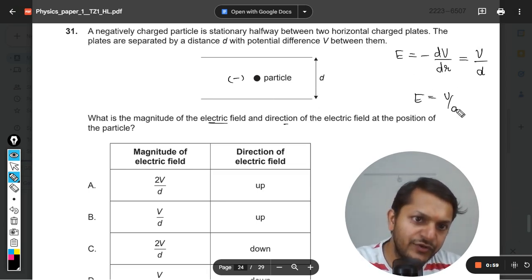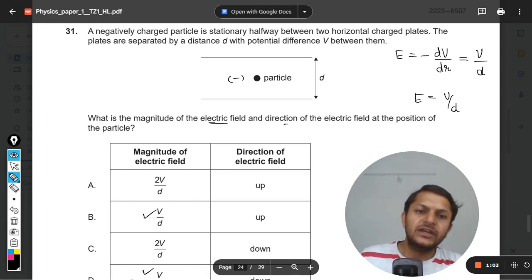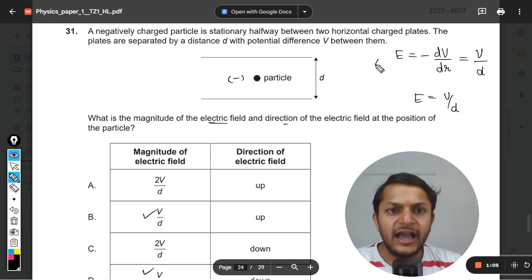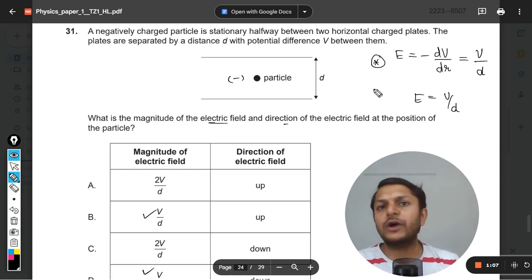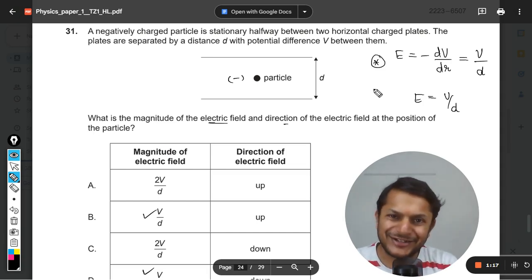Clearly E will be equal to V by d. There is no thought involved in this. E is equal to V by d. And in many other videos also, I have given you this formula. This formula is extensively used in IB. You just need to remember it. Check it out if it is given in the data booklet. If it is not, please remember it. E is equal to V by d.